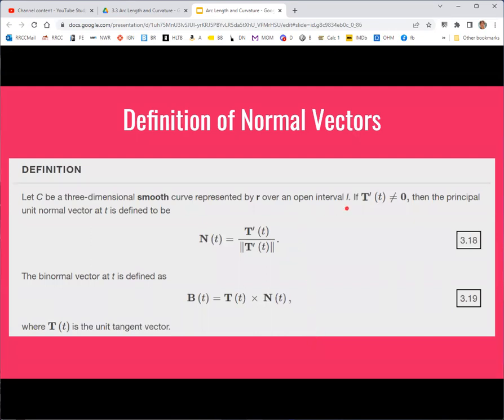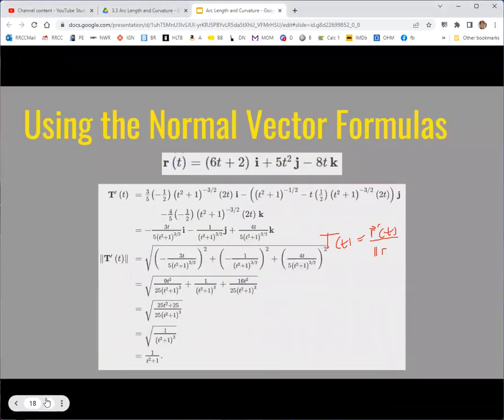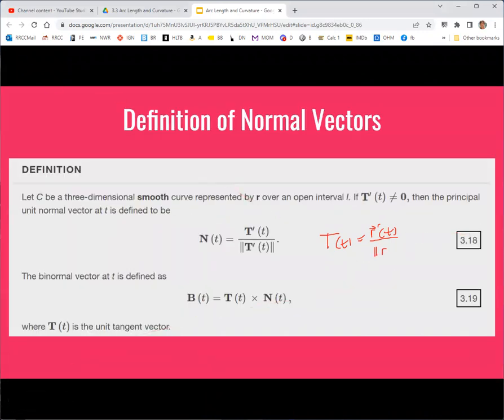If you do have the principal unit tangent vector, then you can get the unit normal vector in a similar process to the tangent vector. We're taking the derivative and then make it a unit vector. Recall that's what we did with R to get T. T came from R prime of T over magnitude of R prime of T. So take the derivative divided by the magnitude to make it a unit vector. Same thing with T, you do it a second time to get the normal vector. To get the binormal, you just do the cross product of the tangent and the normal.